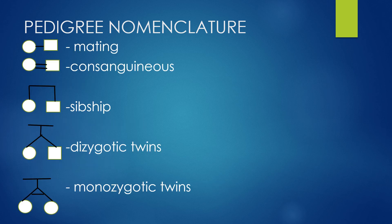A circle and a square joined together by a horizontal straight line represents two people that are married or together have children. A circle and a square joined by two straight lines represents consanguinity. Consanguinity means two people that are related and end up getting married or having children together — they could be siblings, first cousins, or second cousins. The important thing is that these two people are related.